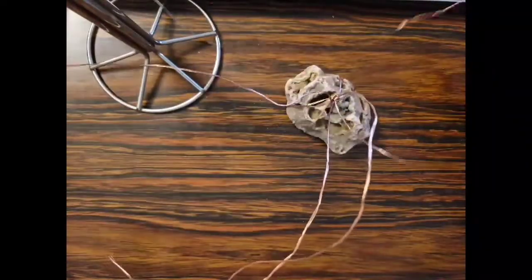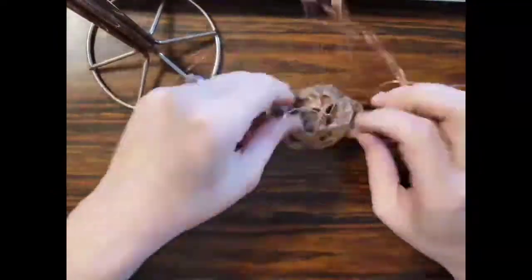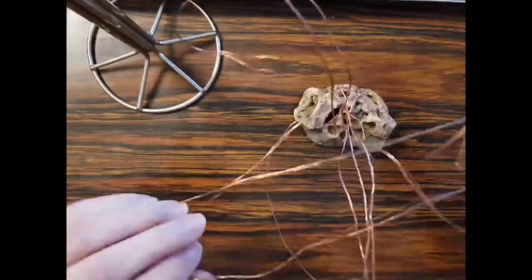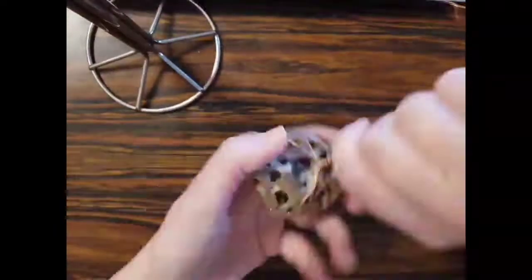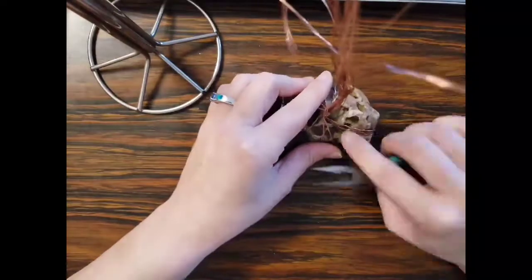Taking my copper wire and starting to wrap around to make the base and the root system of the tree. Forming the base of the tree and twisting and forming the root system with the pliers.